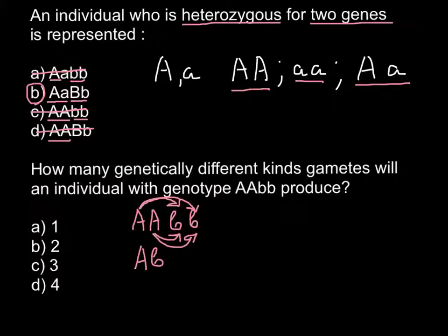So only one genotype is possible here, that is A, b. And gametes are always haploid. So if we have a diploid organism where each gene is represented with two alleles, in the gametes we would have only half the number of the diploid number — so we would have only one allele from each gene. This allele is the same as the second one, since both are small b. So this is only one variant that is possible.